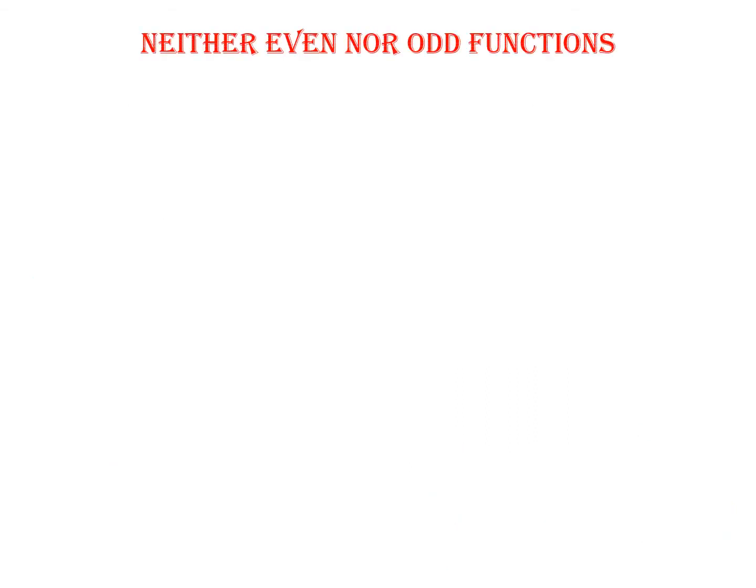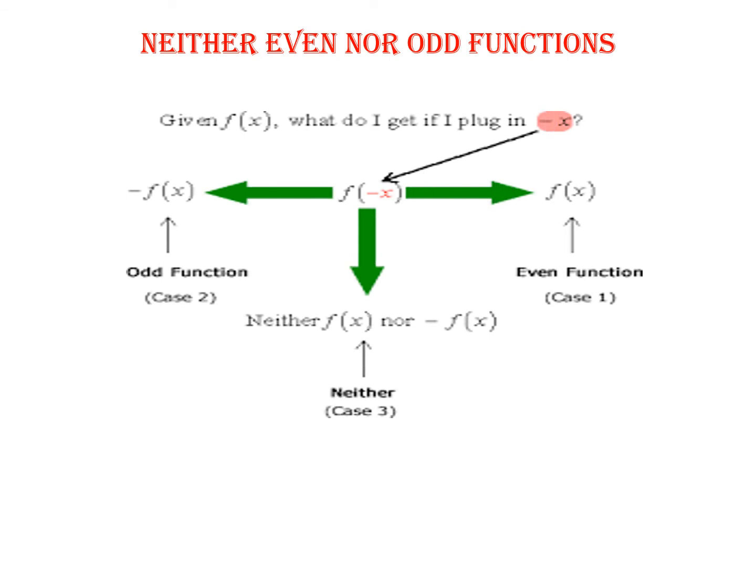Generally, when we consider functions, we may think it has to be either even or odd. That is not the case. There are functions which will not be even or odd. When f of x is not equal to f of minus x and not equal to minus f of minus x, we consider them as neither even nor odd. Examples are e power x and x plus x squared. If you substitute x as minus x, for example e power minus x, you are not going to get back e power x or minus e power x. So it is totally different — a classic example for neither even nor odd functions.